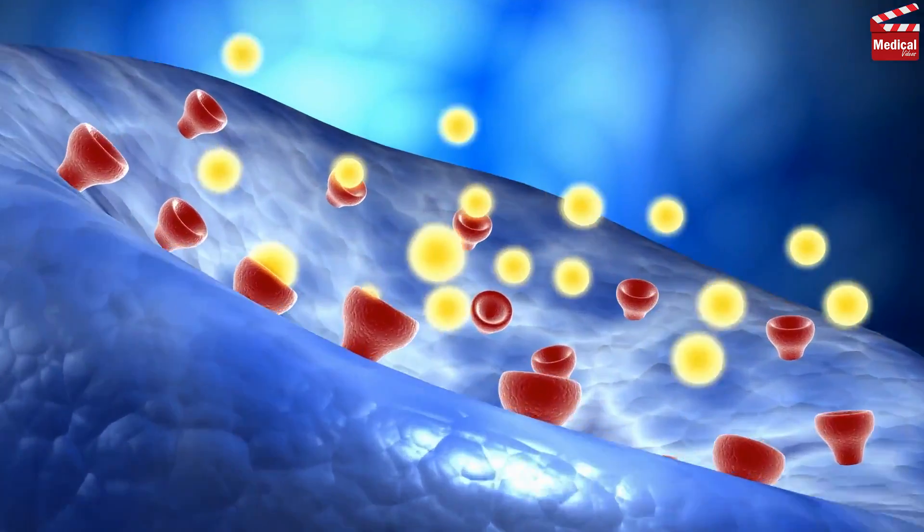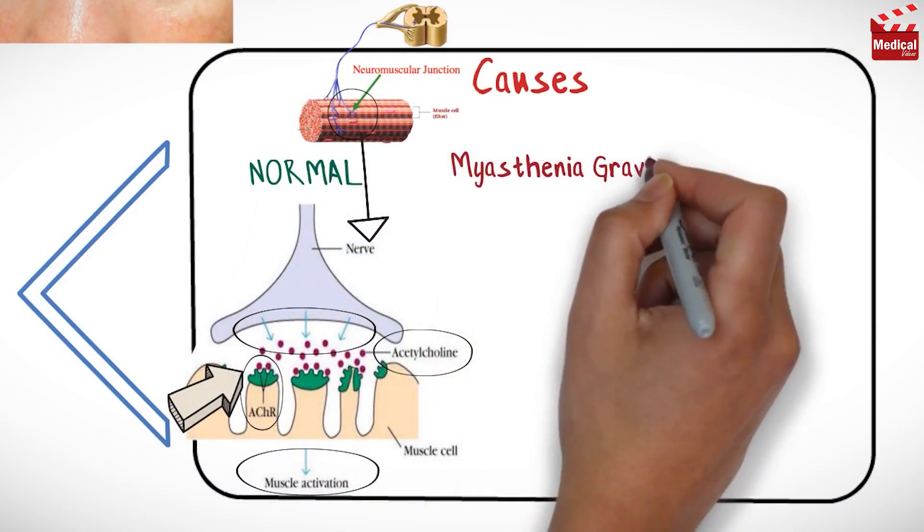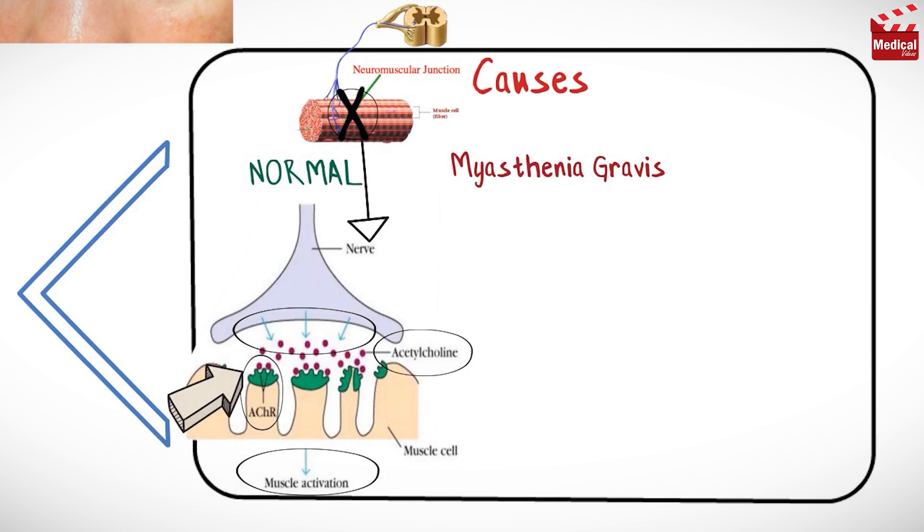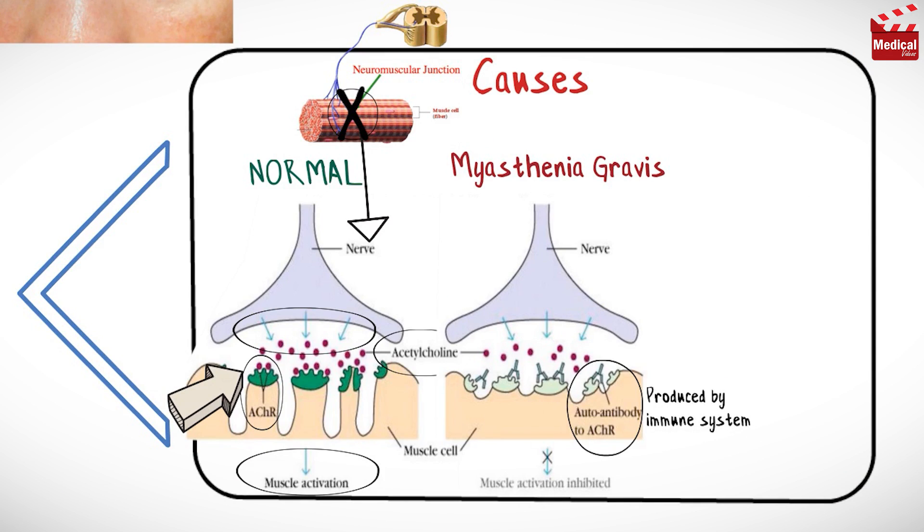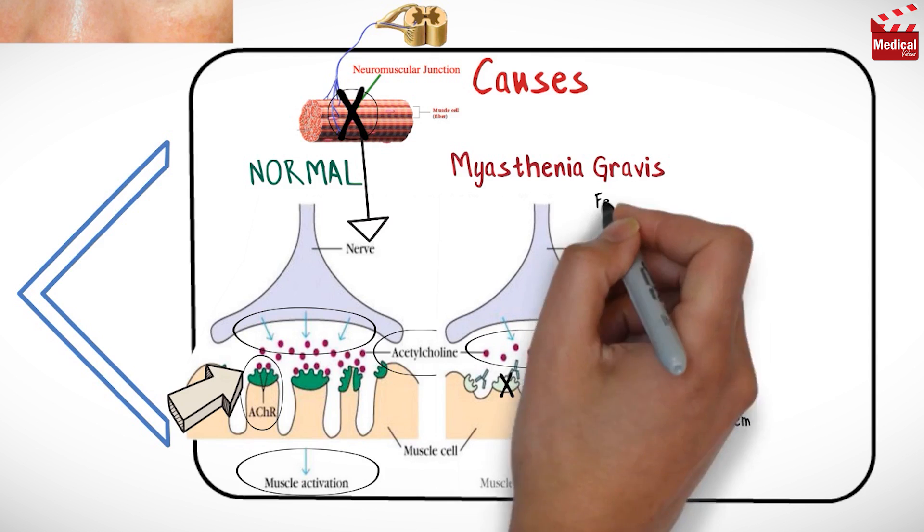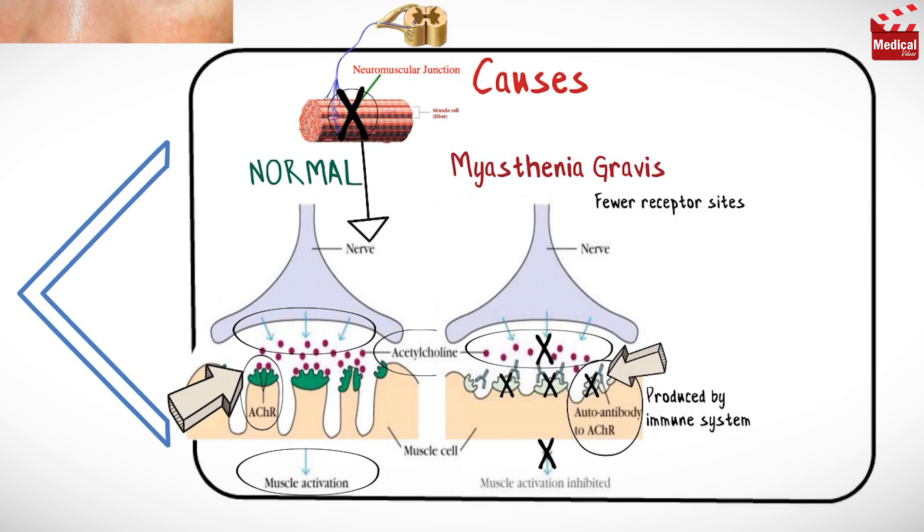In myasthenia gravis, there's a breakdown in this normal communication between nerves and muscles. In patients with myasthenia gravis, acetylcholine receptor antibodies are produced by the immune system, and these antibodies bind to nicotinic acetylcholine receptors and block or destroy many of the receptors. This prevents the acetylcholine from being able to stimulate the receptor and trigger muscle contraction. So with fewer receptor sites available, muscles receive fewer nerve signals, resulting in weakness.